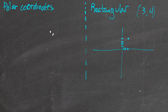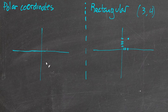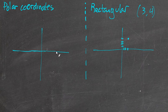Polar coordinates are different. We don't have an origin, we have a pole. So the center of the graph here is a pole. And rather than left and right, up and down, we have an angle and then a distance from the pole.